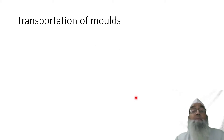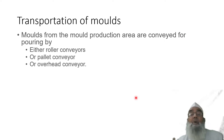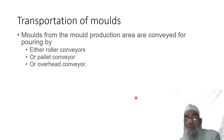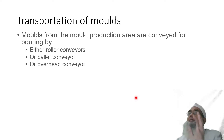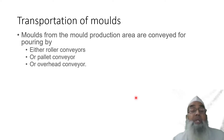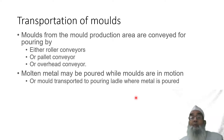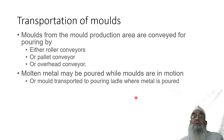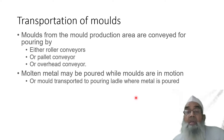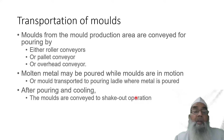For transportation of molds, molds from the mold production area are conveyed for pouring by roller conveyors, pallet conveyors, or overhead conveyors depending upon the size and the distance to be transported. Molten metal can be poured into molds while the molds are in motion, with the ladle movement synchronized with the moving molds.